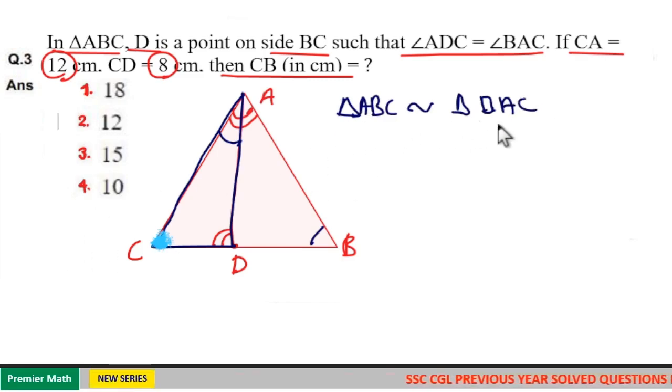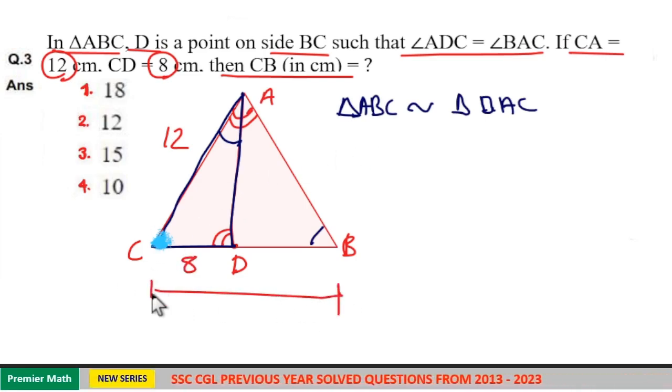When two triangles are similar, the ratio of corresponding sides are equal. Here if you take the side opposite to B, AC equals 12 and CD equals 8. Now take the corresponding side, we need BC.